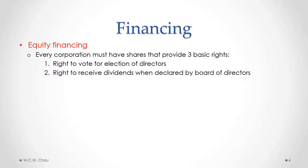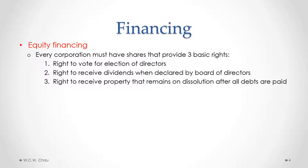The second basic right is the right to receive dividends when declared by the board of directors. Dividends are the payment of net profits by the corporation to the shareholders, and those dividends need to be declared by the board of directors. The third basic right is the right to receive property that remains on dissolution after all debts are paid. When a corporation is being dissolved or wound up, we liquidate all the assets, pay off all debts first, and then if there's still money left over, we parcel it out to the shareholders.